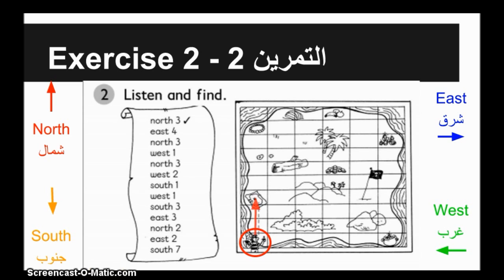North 1, 2, 3. East 1, 2, 3, 4. North 1, 2, 3. West 1. North 1, 2, 3. West 1, 2. South 1. West 1.